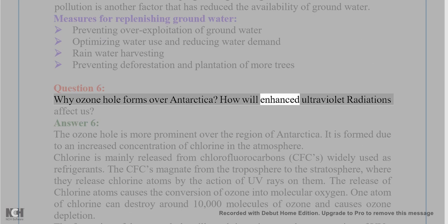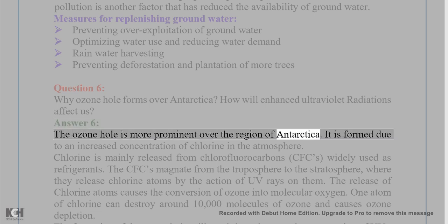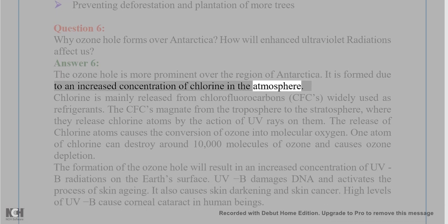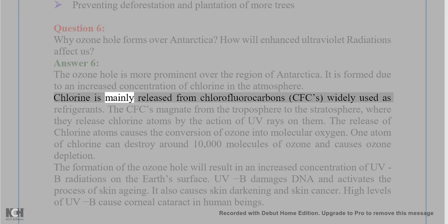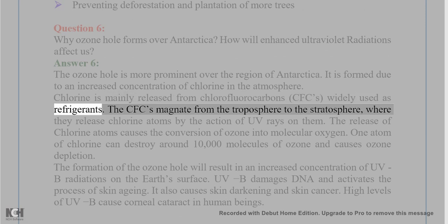Question 6: Why does the ozone hole form over Antarctica? How will enhanced ultraviolet radiations affect us? Answer: The ozone hole is more prominent over Antarctica. It is formed due to an increased concentration of chlorine in the atmosphere. Chlorine is mainly released from chlorofluorocarbons (CFCs), which are widely used as refrigerants.